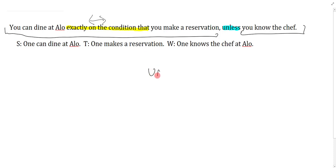So really this thing is one part of the unless and this thing is the second. I know that unless is in the middle. You know the chef is W, and you can dine at Allo exactly on the condition that you make a reservation is S biconditional T, and I'm going to put brackets in there to preserve the unless.